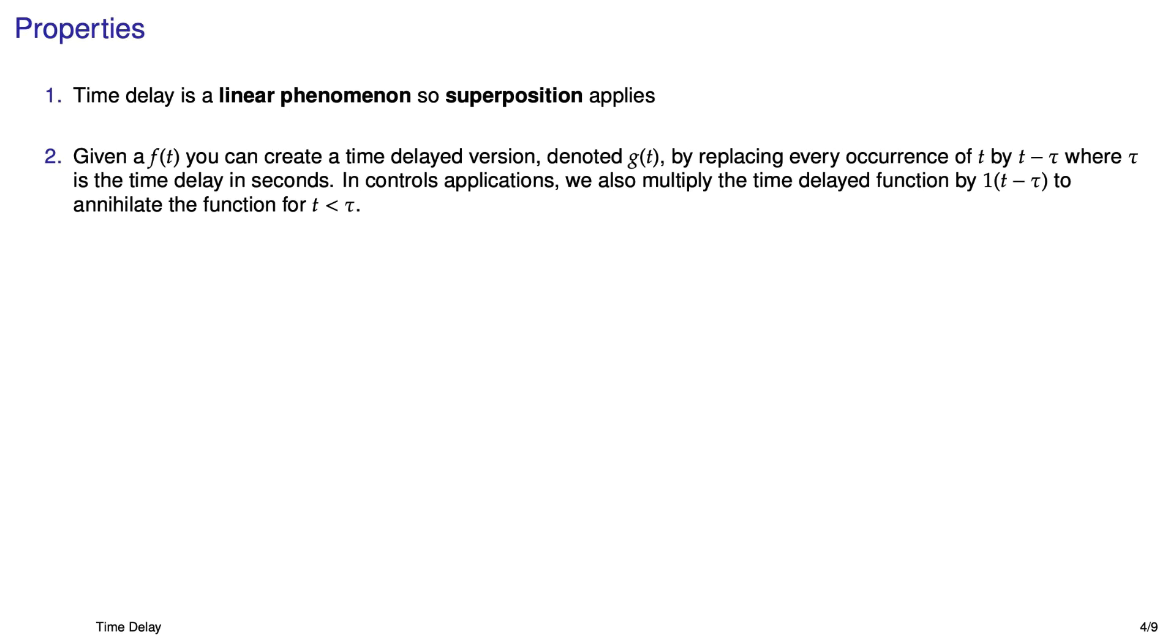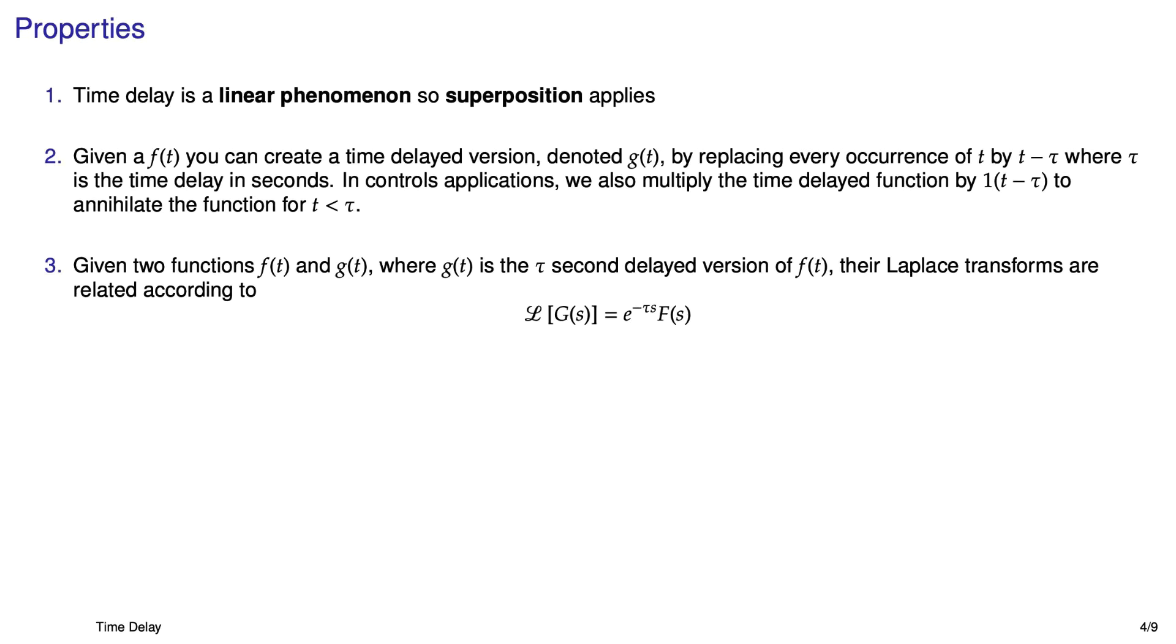That will annihilate the function for t less than tau. And here's the important part from a Laplace standpoint. If you have a time delayed function and you need to take the Laplace transform of it, first you have to back out what the undelayed function is. So just replace all those t minus tau's with t's. You'll have the undelayed version and then take the Laplace transform of it and simply multiply by e to the negative tau s.